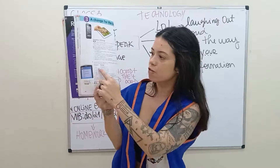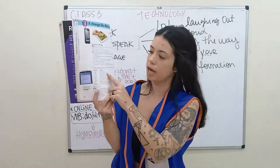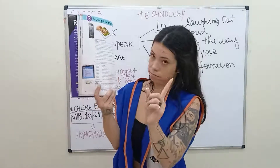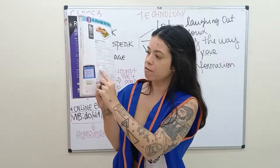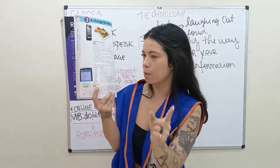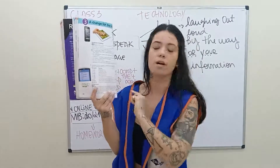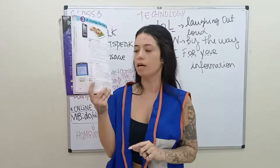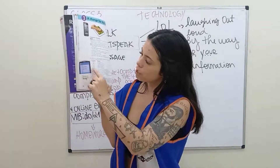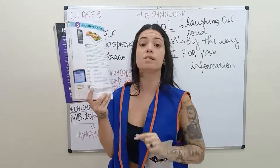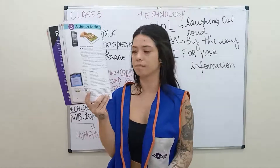The first one was done for us. So here you have the text speak and next to it you have the meaning. GTG, for example, is got to go. Two, BFN, for example, is bye for now. And then you have to do from three to ten. Let's see how much you know from text speak.